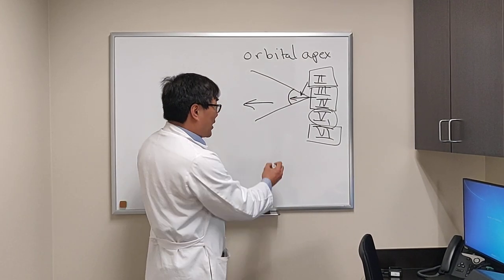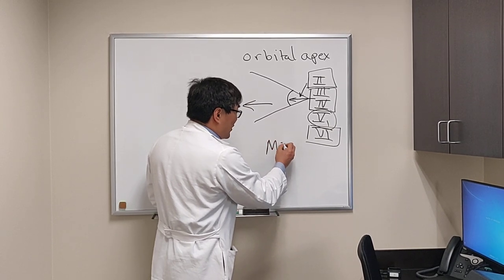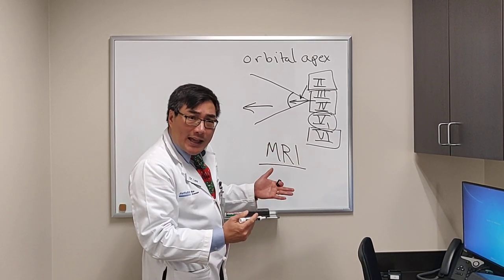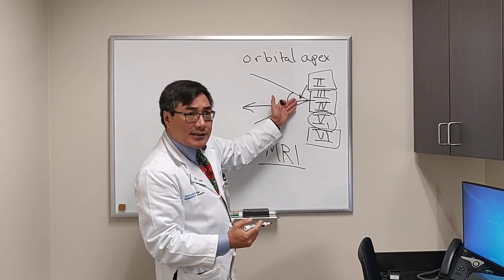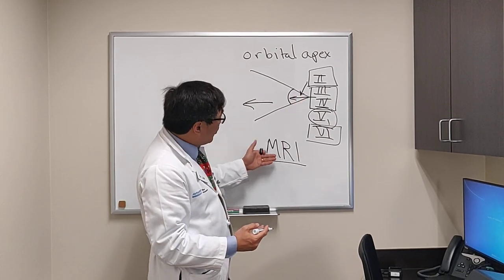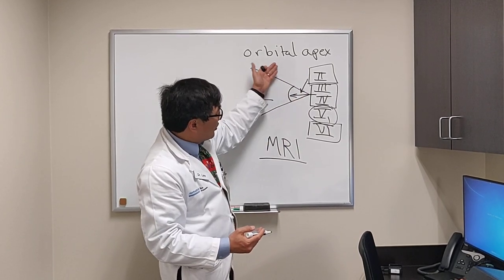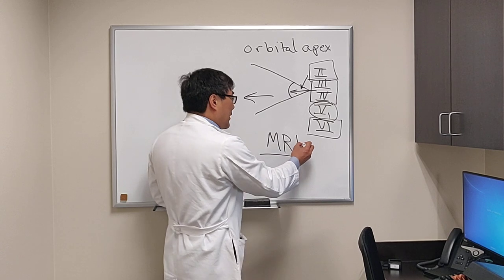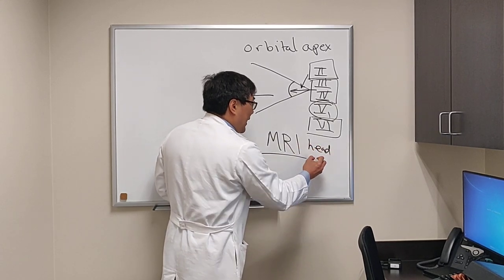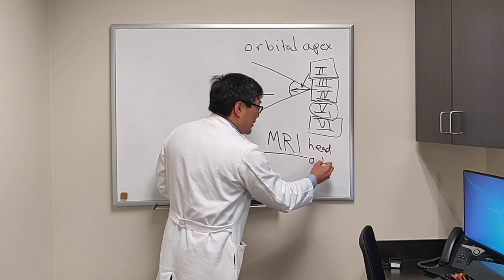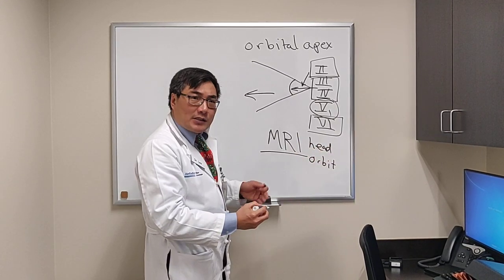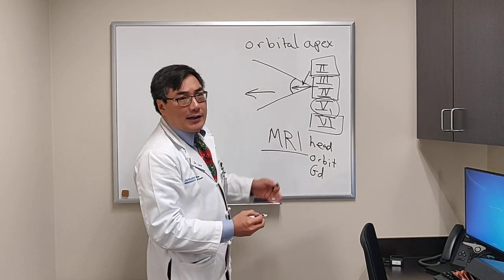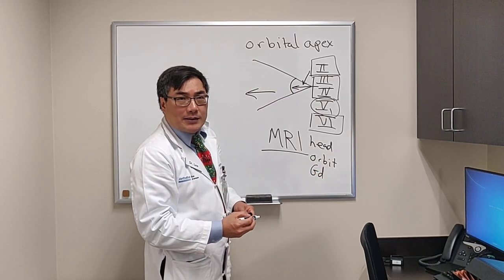The most common error is only imaging the head. If we only do an MRI of the head, we might miss a subtle orbital lesion. A patient who has an orbital apex problem has to have both an MRI of the head and the orbit. Typically we like to use fat suppression and gadolinium so that we can identify the orbital apex lesion.